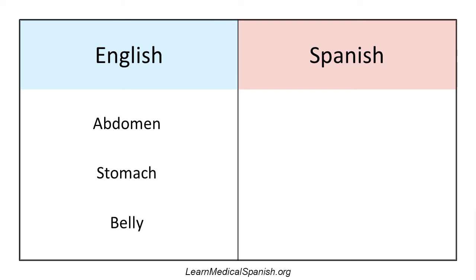Here's the first word. Every time I say the word in Spanish, I'm also going to say the article — like 'the abdomen,' 'the stomach' — because the first word is abdomen. So how do you say 'the abdomen' in Spanish? The reason I'm saying 'the abdomen' is because it's more common to say 'the' in front of body parts in Spanish, and you want to get used to whether it's masculine or feminine — el or la, or maybe los or las if it's plural.